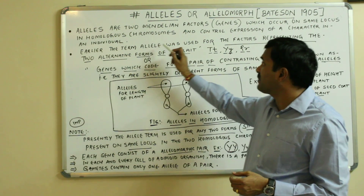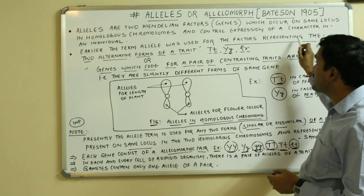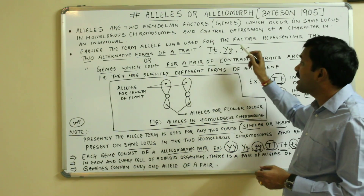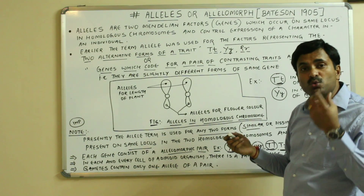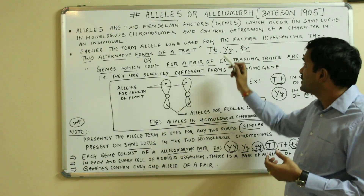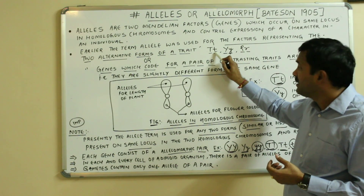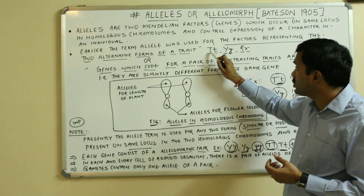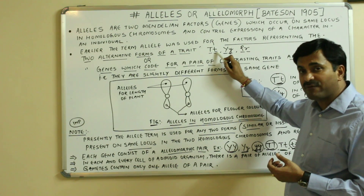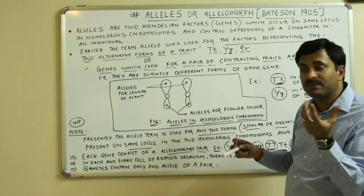Earlier, the term allele was used for factors representing the two alternative forms of a trait — meaning alleles represent two alternative forms of a trait. For example, capital T and small t are alleles: capital T represents tallness and small t represents dwarfness, so they represent the height of the plant.